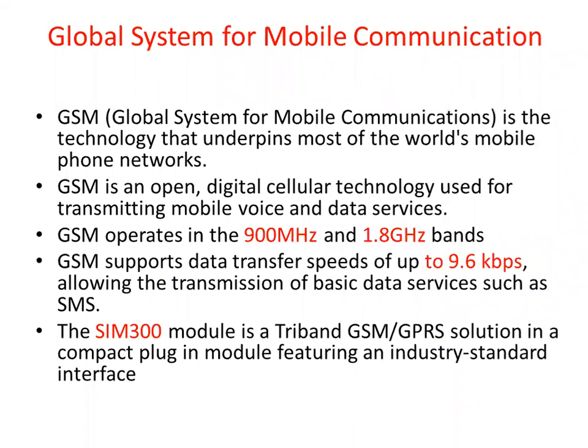First of all, we will see the GSM — Global System for Mobile Communication. GSM is the technology that underpins most of the world's mobile phone networks. GSM is an open digital cellular technology used for transmitting mobile data and data services. GSM operates in the frequency of 900 MHz and 1.8 GHz bands. GSM supports data transfer speeds of up to 9.6 kbps, allowing the transmission of basic data services such as SMS. The SIM-300 module is a tri-band GSM/GPRS solution in a compact plug-in module featuring an industry standard interface.